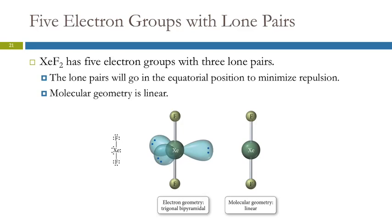Five electron groups, and three of those are lone pairs. Xenon difluoride. We have two bonds and three lone pairs. Again, the lone pairs are going in the equatorial position. We pull off this third equatorial atom, and that's linear. That would have a bond angle of 180.